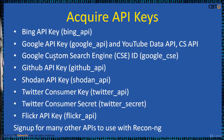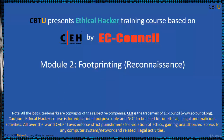Some of the API keys used with ReconNG include the Bing API key, Google API key, Google Custom Search Engine (CSE), GitHub API key, Shodan API key, and several others. Sign up for many other APIs to use with ReconNG. Thanks for watching.